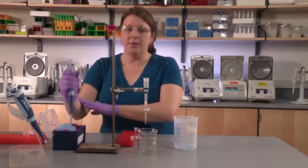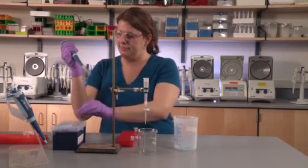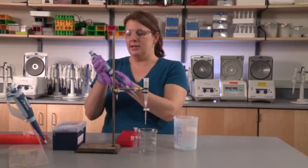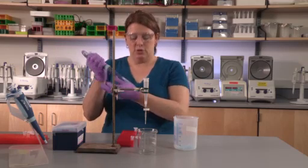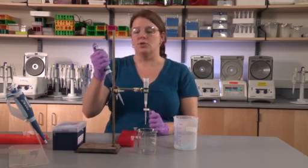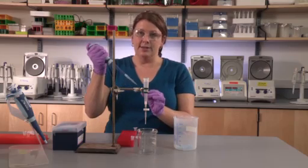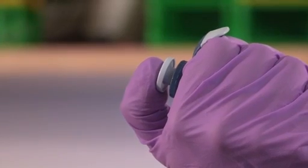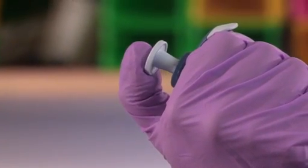Place a pipette tip onto the end of the pipette. Be certain that it's set to 1,000 microliters or 1 mL. Use your thumb to depress the plunger and draw up the first mL of elution buffer.